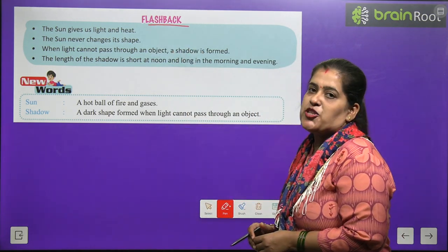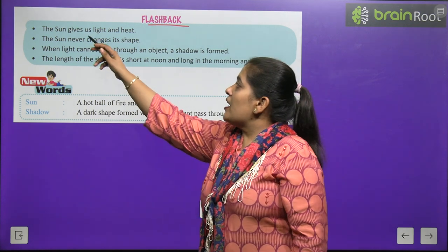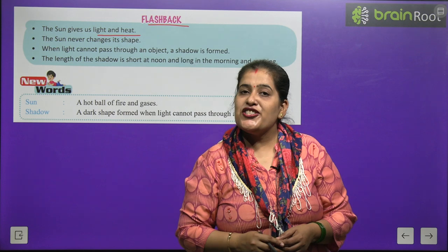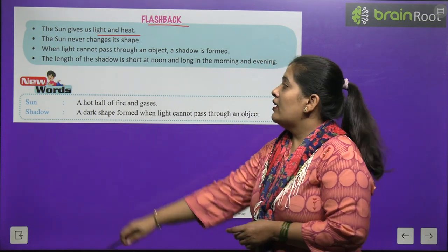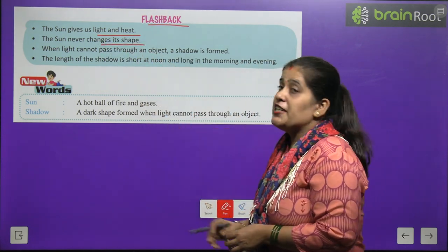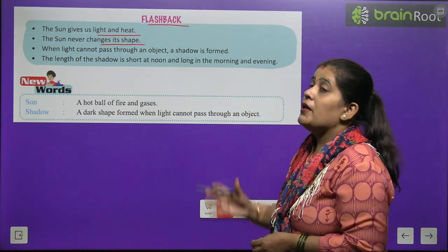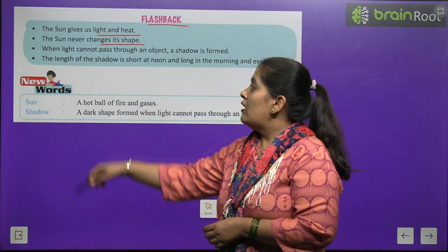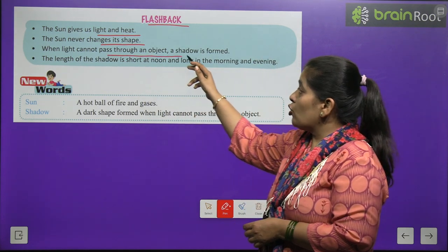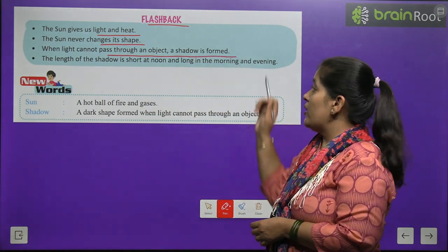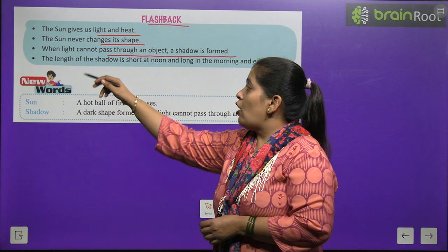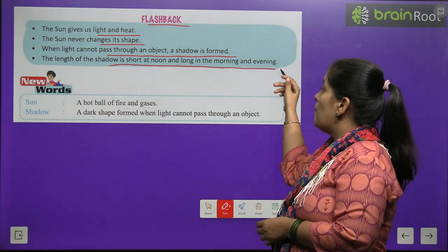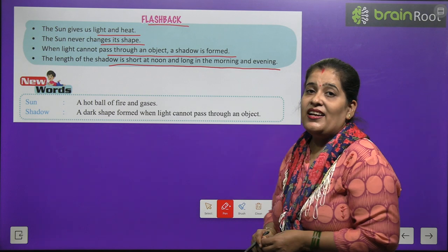Now, time to go in flashback. The sun gives us light and heat. The sun never changes its shape. When light cannot pass through an object, a shadow is formed. The length of the shadow is short at noon and long in the morning and evening.